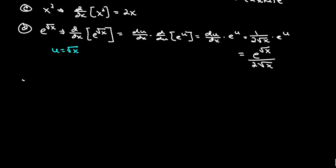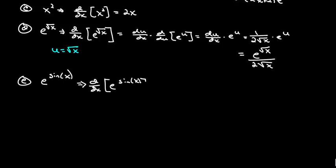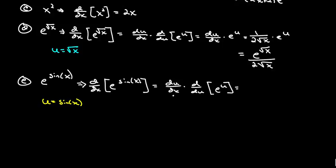For part E, we've got e raised to the sine of x — kind of an odd looking function. Let's go ahead and differentiate d/dx of e to the sine x. Again, we're going to make a substitution. Let's let u be equal to sine x. So this becomes du/dx times d/du of e to the u. We need to know what du/dx is — the rate of change of u with respect to x is cosine x. So this will be cosine x times e to the u, which is e to the sine x.